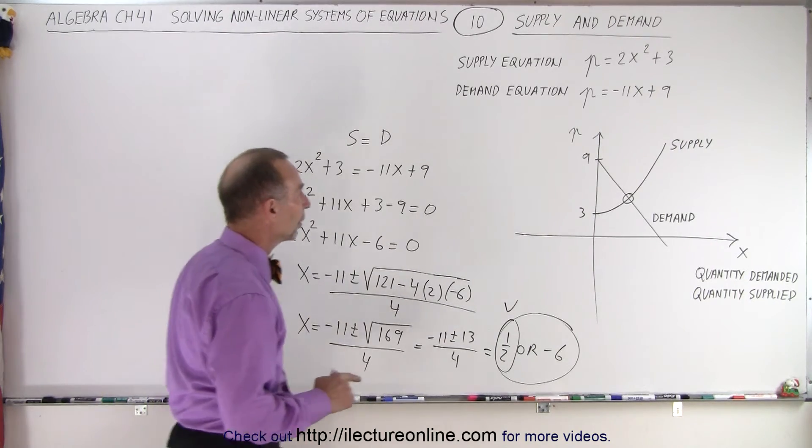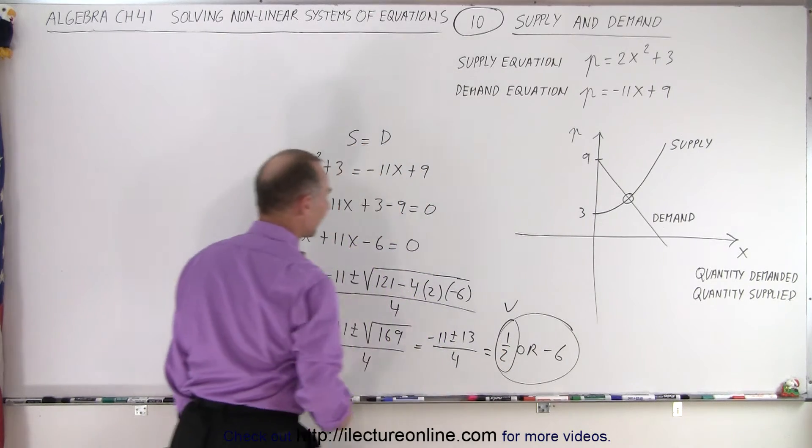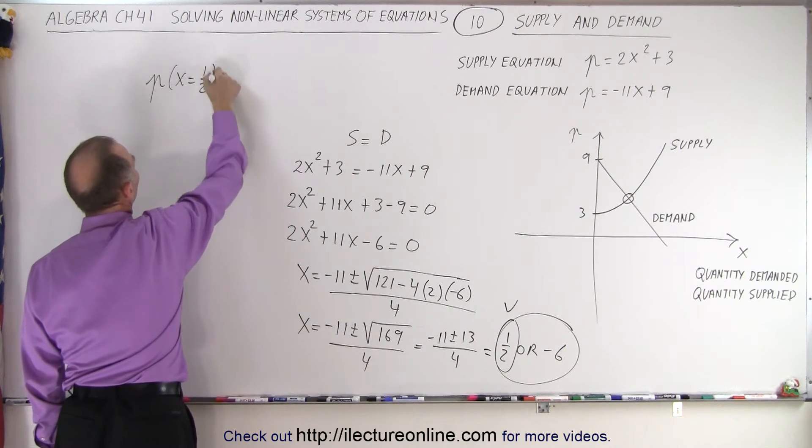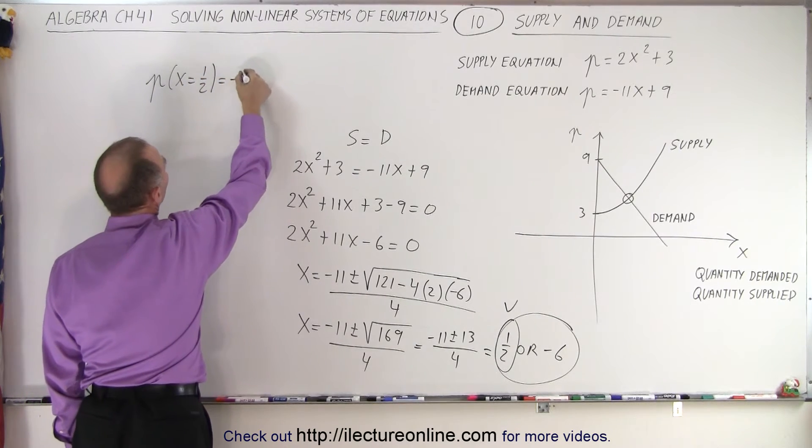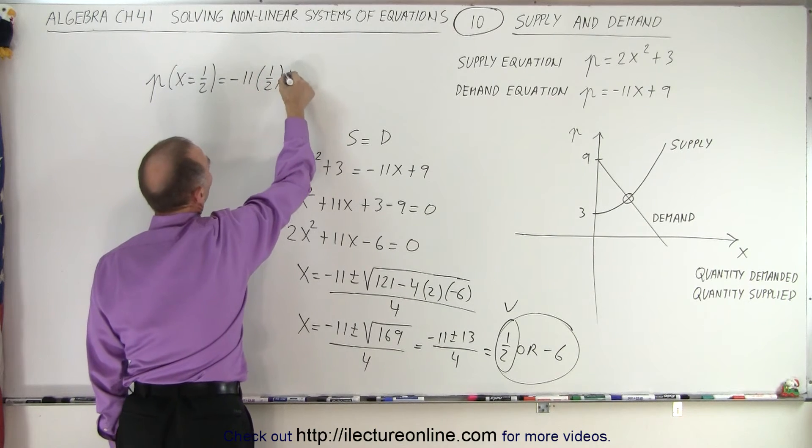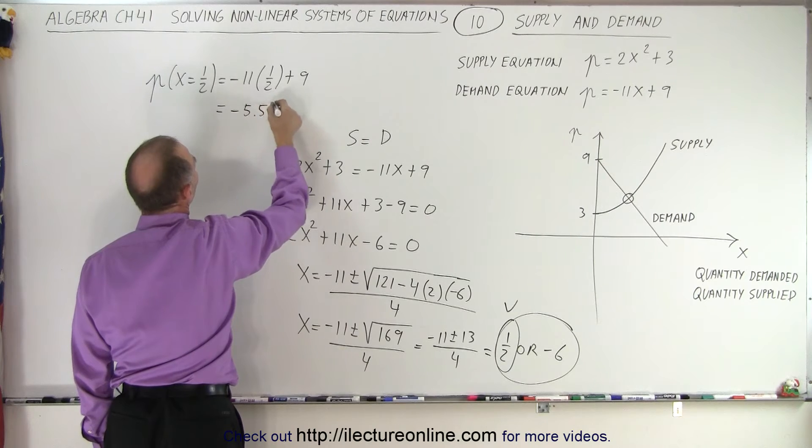And now to find out what the corresponding price will be, we go ahead and plug the value for X in there. So the price, when X is equal to 1 half, is equal to minus 11 times 1 half plus 9. So that would be equal to minus 5.5 plus 9.